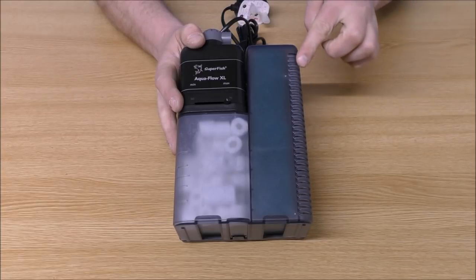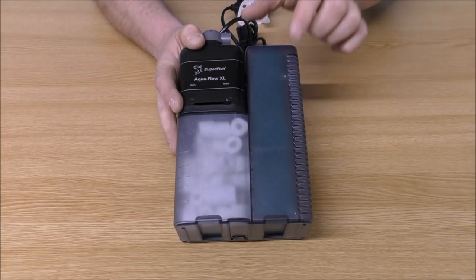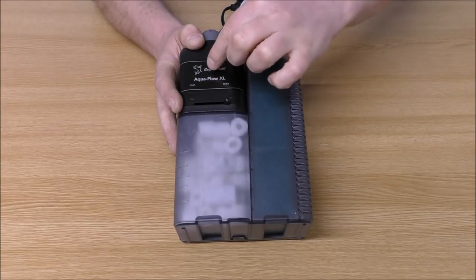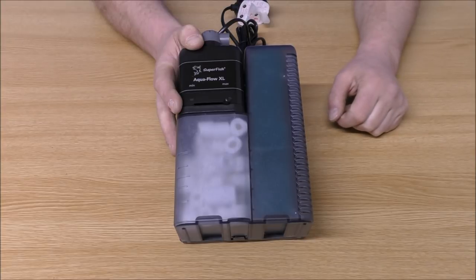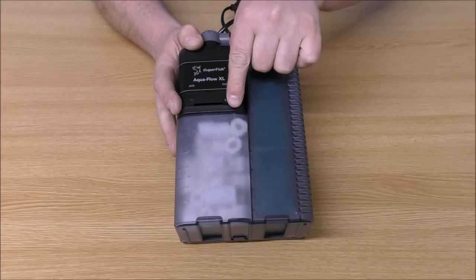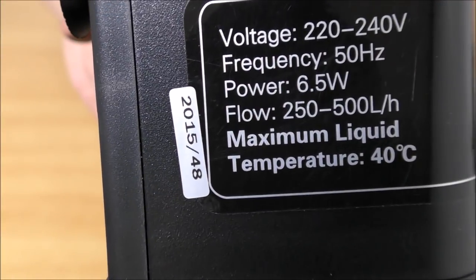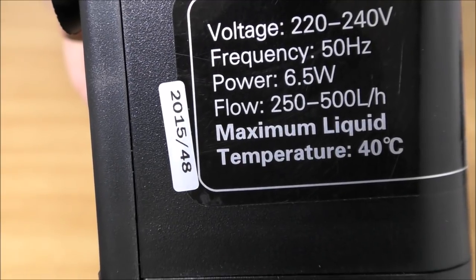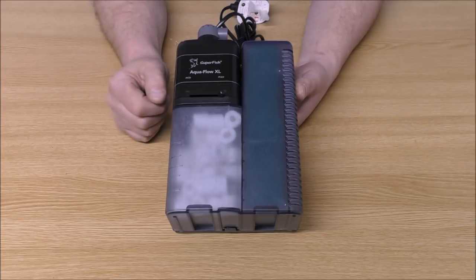Water's drawn in through here, goes through a coarse foam, goes through media, into the pump, back out to the tank. And the pump is controllable from maximum flow to minimum flow. There we go. Flow 250 litres per hour to 500 litres per hour. You would divide 500 litres by 3.8 and that would give you the output in US gallons.